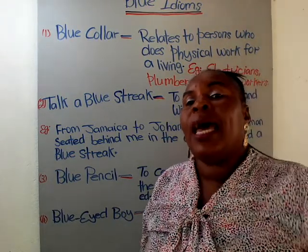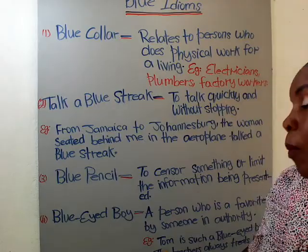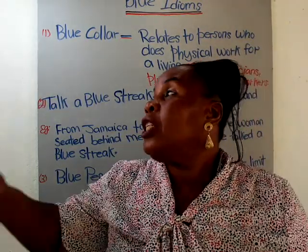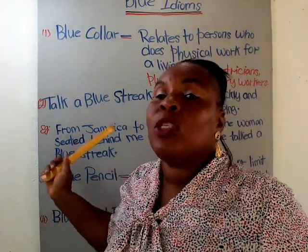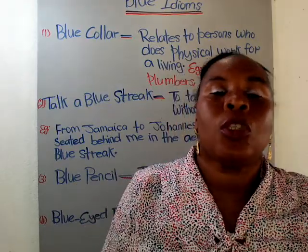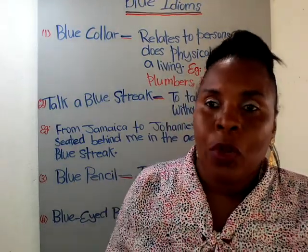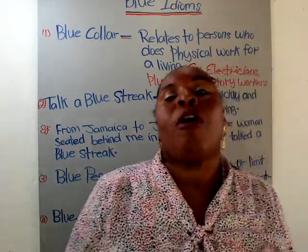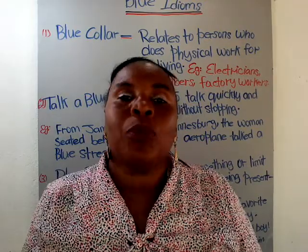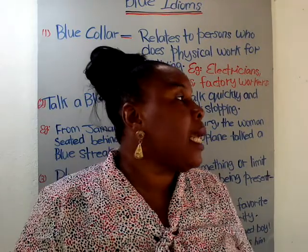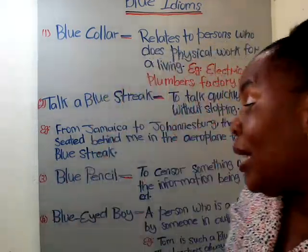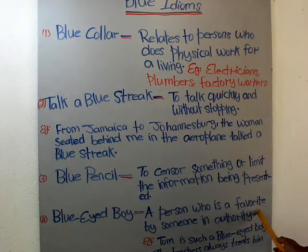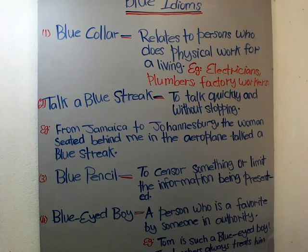Seven children raise their hands and the teacher chooses Tom to answer the question. The teacher wants something done on the board — she chooses Tom. She wants a message sent to the principal's office — she asks Tom. That is what it means: blue-eyed boy, a person who is a favorite by someone in authority.